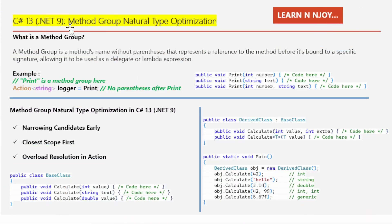C# 13 .NET 9 Method Group Natural Type Optimization. Let's first understand what a method group is. A method group is a method's name without parentheses that represents a reference to the method before it's bound to a specific signature, allowing it to be used as a delegate or lambda expression.